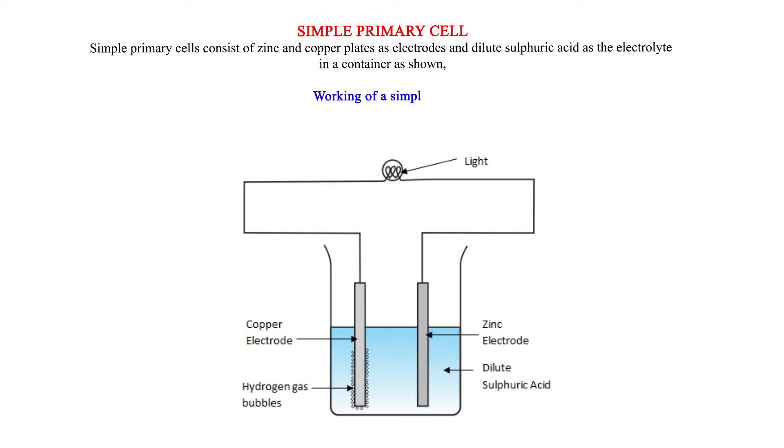Working of a simple cell. Dip zinc and copper plates into a beaker containing dilute sulfuric acid. Connect the two plates to a bulb.